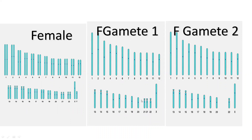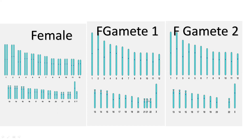It forgot to separate — it should have separated and gone to the other side, but there is no segregation here. This is normal male Gamete 1 and Gamete 2 — everything is okay. Now let's see the cross between male Gamete 1 and female Gamete 1.